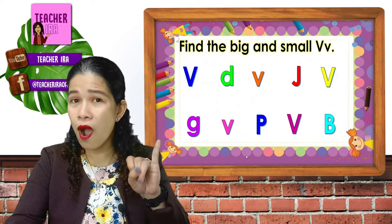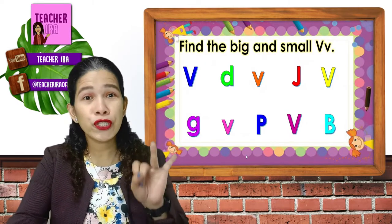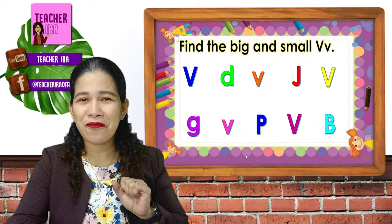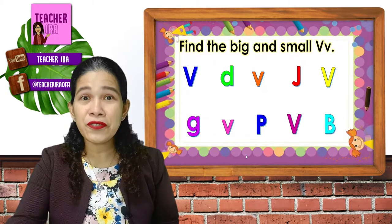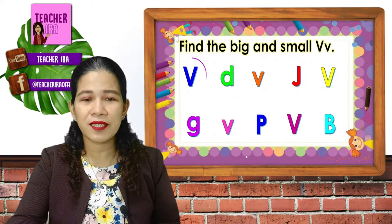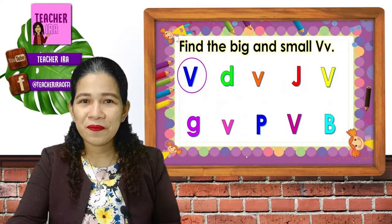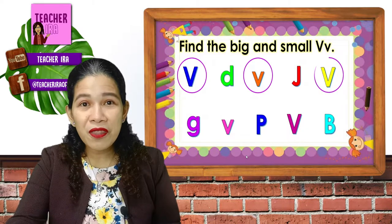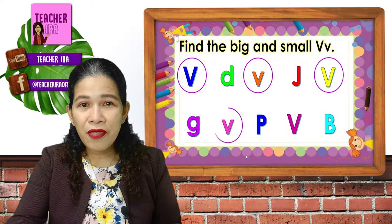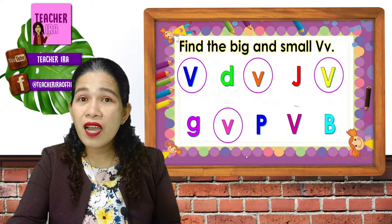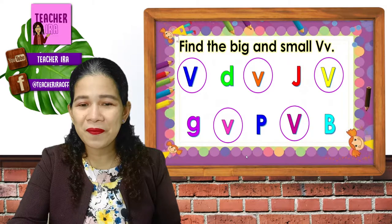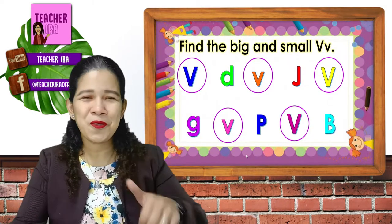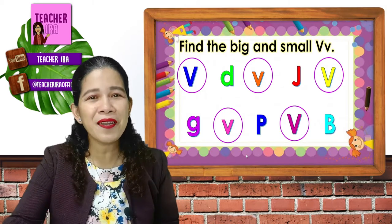One, two, three, four, and five. Let's see if your answers are all correct. Did you find that one? This one. How about this letter V? This one and this one. Did you find all those five letter Vs? Yeah! Great job, children!